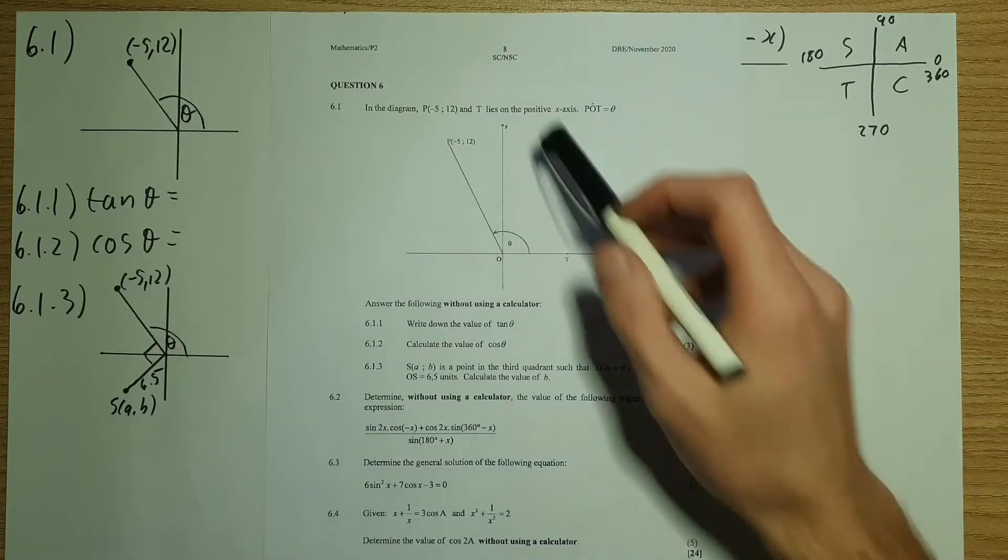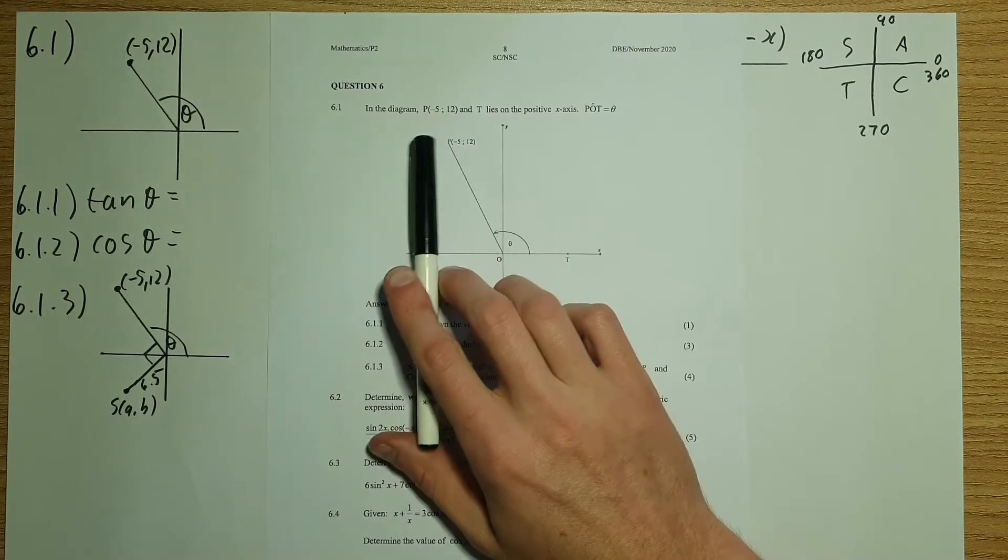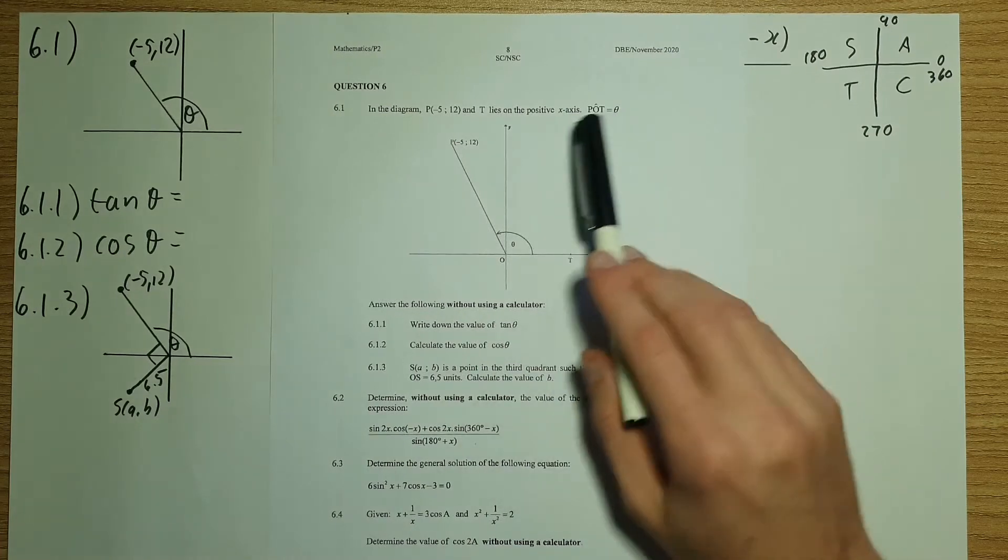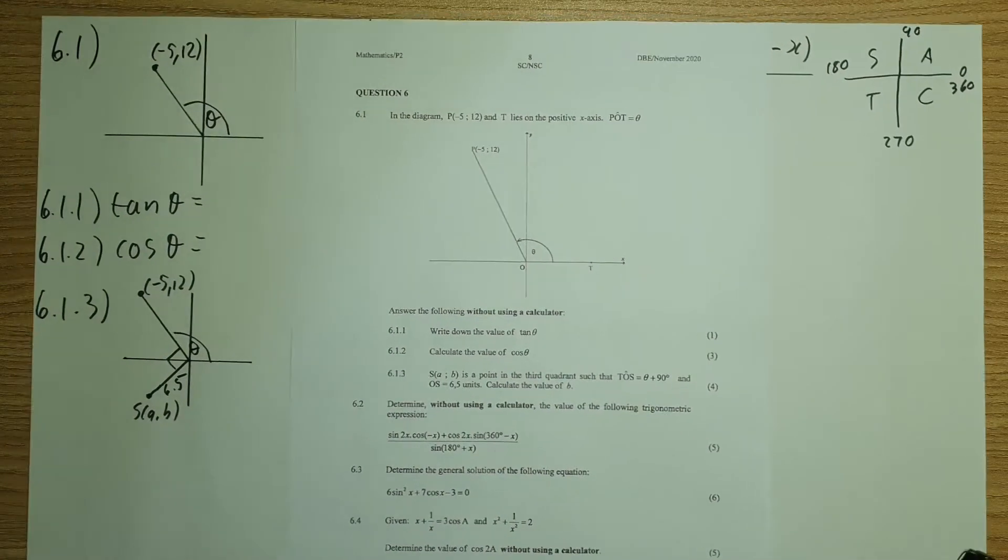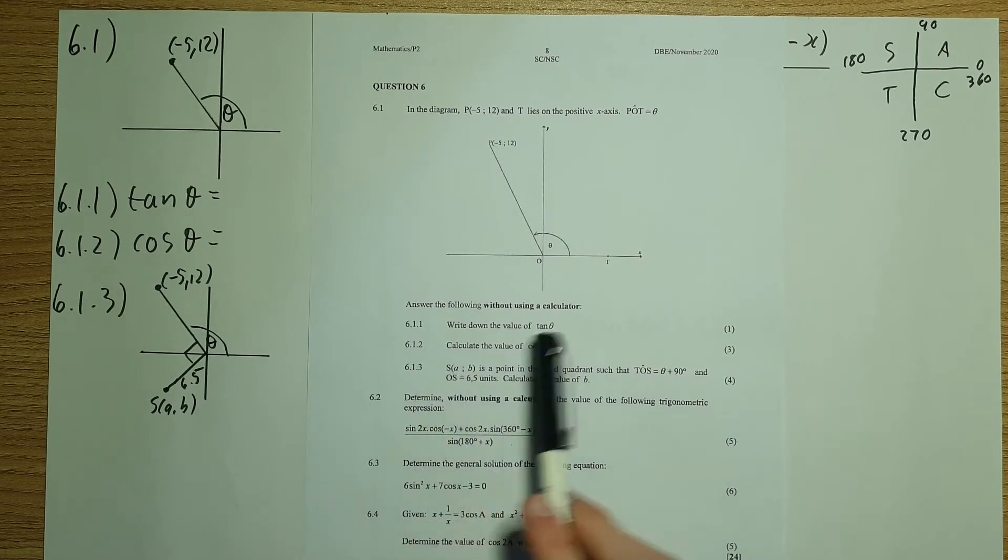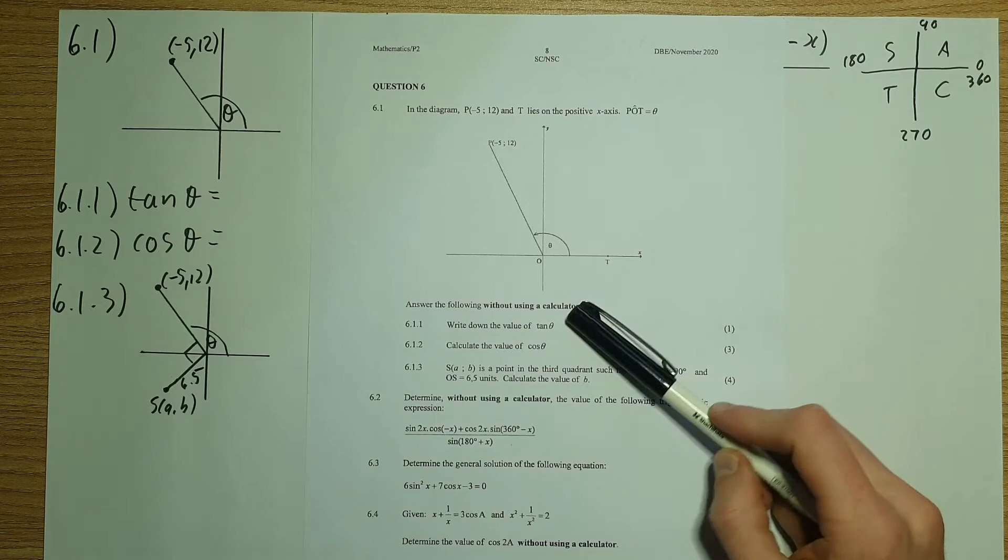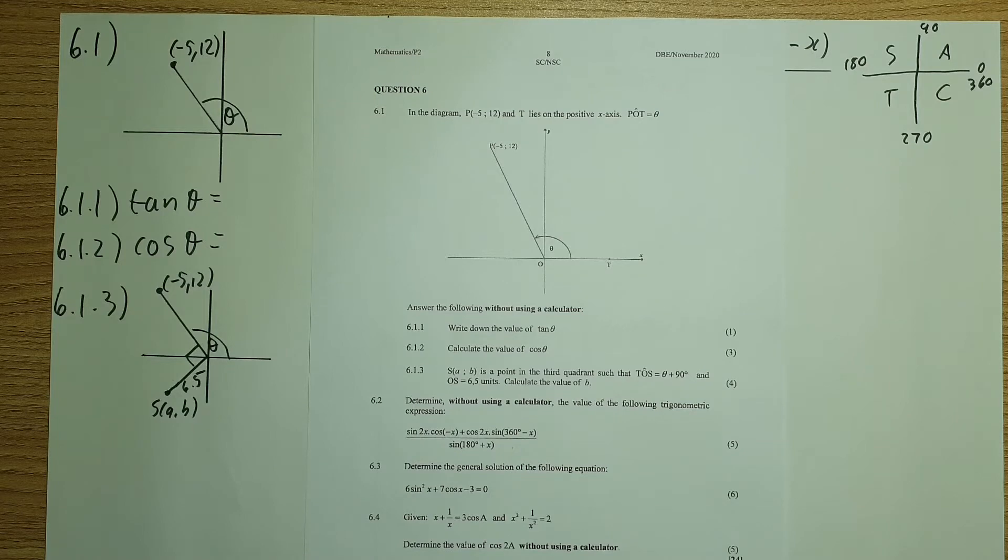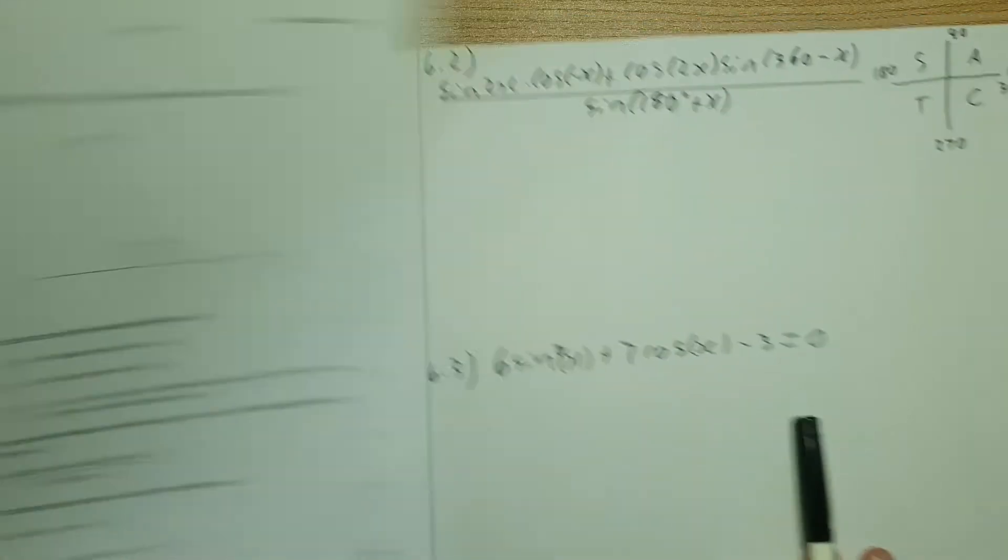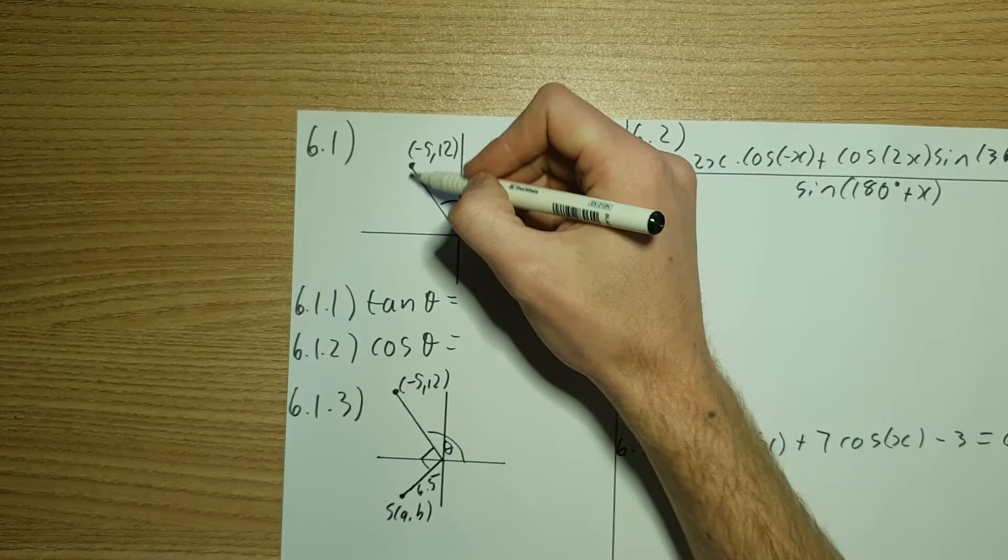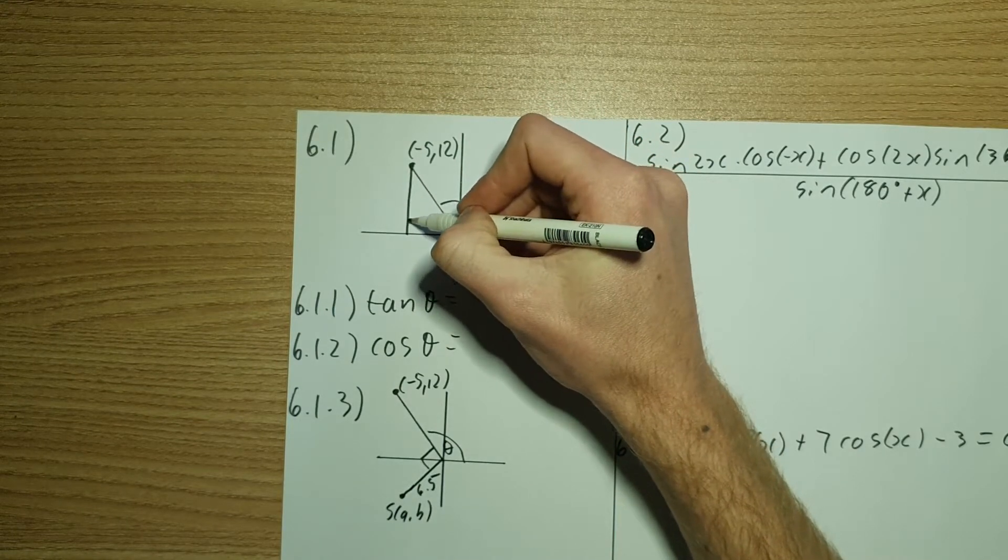So question 6, they've given us the following diagram. They've also said here in the diagram P is negative 5 and 12, and T lies on the positive x-axis where POT is theta. So the minute we see that they're asking us to find sine, cos or tan and they've given us a drawing, it means we need to construct a triangle.